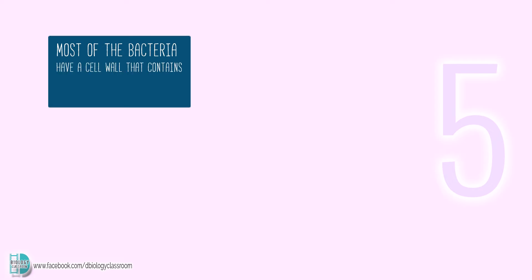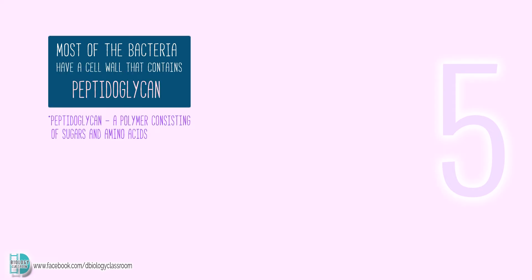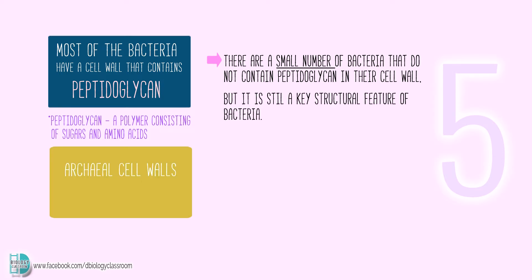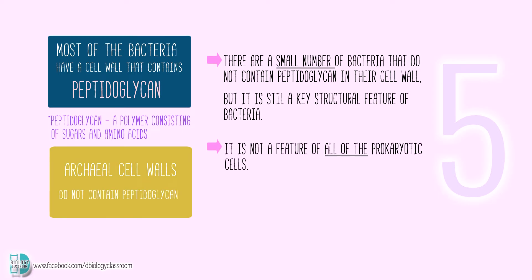Most bacteria have a cell wall that contains peptidoglycan, a polymer consisting of sugars and amino acids. There are a small number of bacteria that do not contain peptidoglycan in their cell wall, but we still consider this a key structural feature of bacteria. Archaea cell walls, on the other hand, do not contain peptidoglycan, so this is not a feature of all prokaryotic cells.